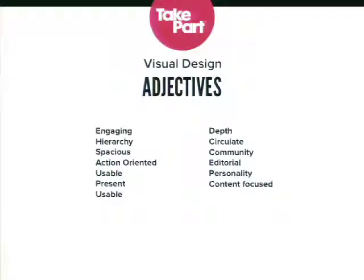A process I use is Style Tiles — I talked about it at DrupalCon Chicago. You can look at the site stil.es. It's a process where I engage the client and ask questions about their brand, then help develop a common visual language so I'm on the same page as the client. I conduct an interview with stakeholders or a virtual survey. The adjectives I got back from TakePart were: engaging, hierarchy, spacious, action-oriented, community — descriptive words that told me what they were looking for visually.